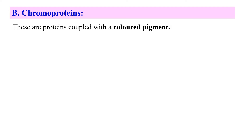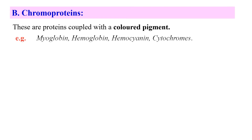Next, chromoproteins. Chromo means color, so these are proteins complexed with some color pigment. Examples include myoglobin, hemoglobin, and hemocyanin. For example, hemoglobin is red in color and hemocyanin is blue in color. These are called color proteins because they are attached to some colored pigment.